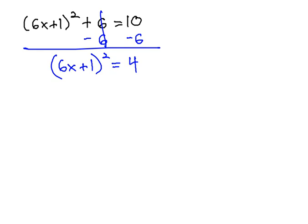Now that the exponent is alone, we can get rid of squared with square root. That square and square roots are inverses, leaving us with 6x plus 1 equals the square root of 4, which is 2, and because we got rid of an even exponent, we need that plus or minus. Even exponents, we need a plus or minus.